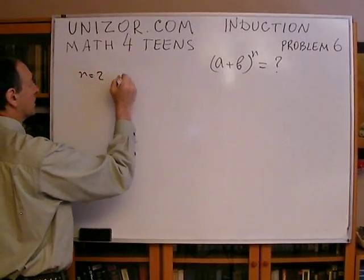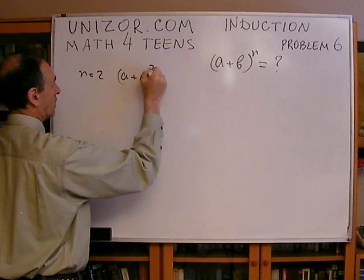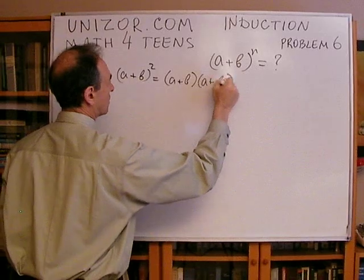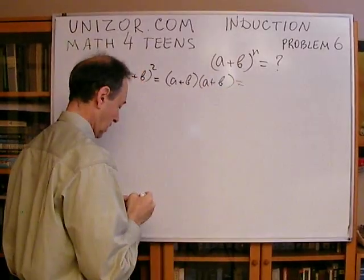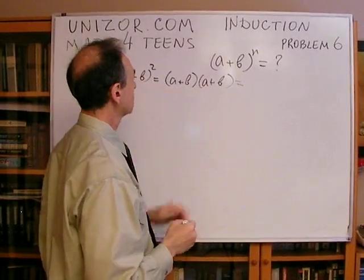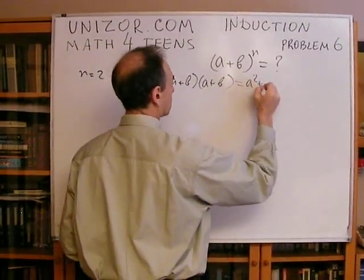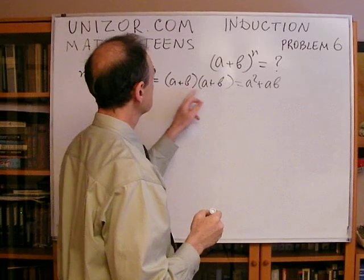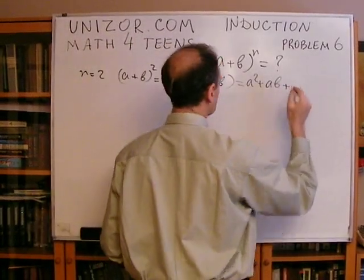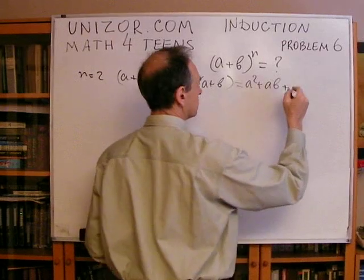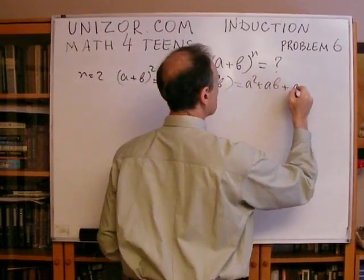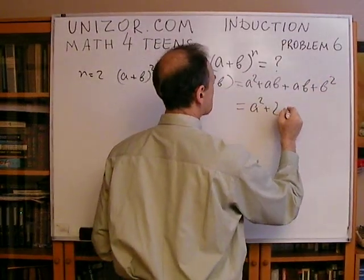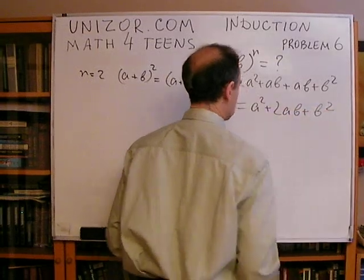For n equal to 2, (a+b)² equals (a+b)(a+b). First we multiply by a, we get a² + ab, and then we multiply (a+b) by b, using the distributive law of multiplication. (a+b)·b = ab + b², which gives us a² + 2ab + b². So that's the final formula.